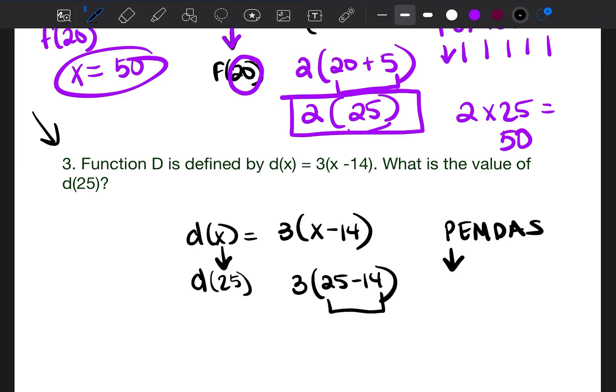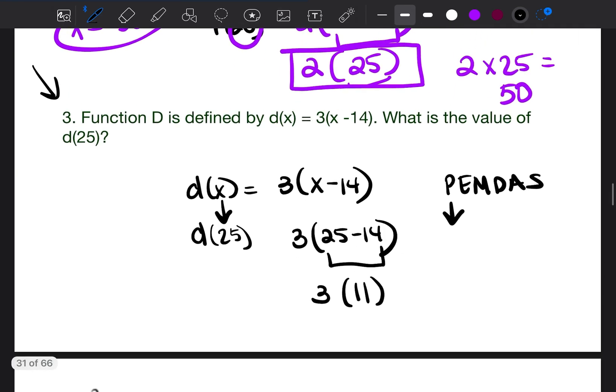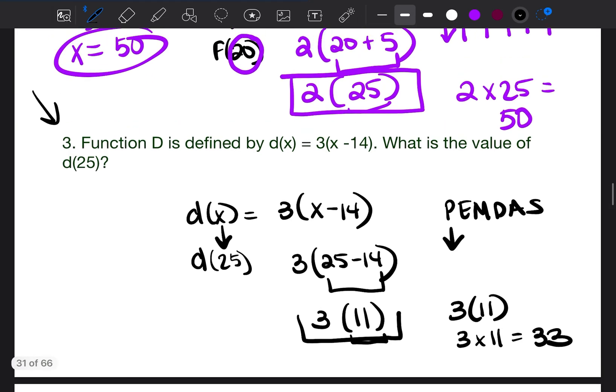Is there an action inside the parentheses? Yes, there is. 25 - 14, that's 11. Then I'm going to bring down the 3. I've done the parentheses. Since there is no longer any action inside the parentheses, this now becomes a multiplication sentence, 3 times 11. 3 times 11 is 33. So when you put in 25 as an input to function d, your output is going to be 33 for x.